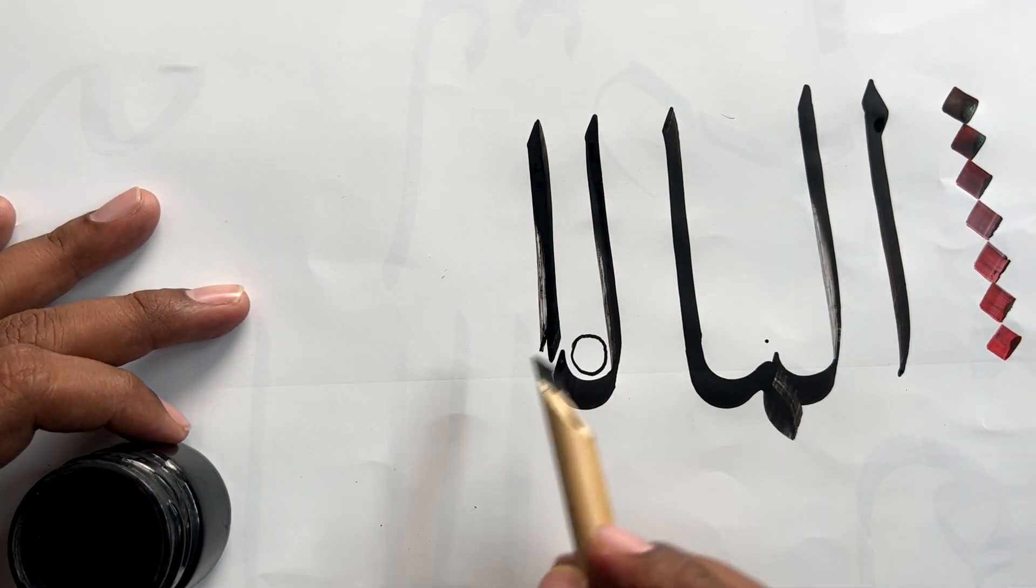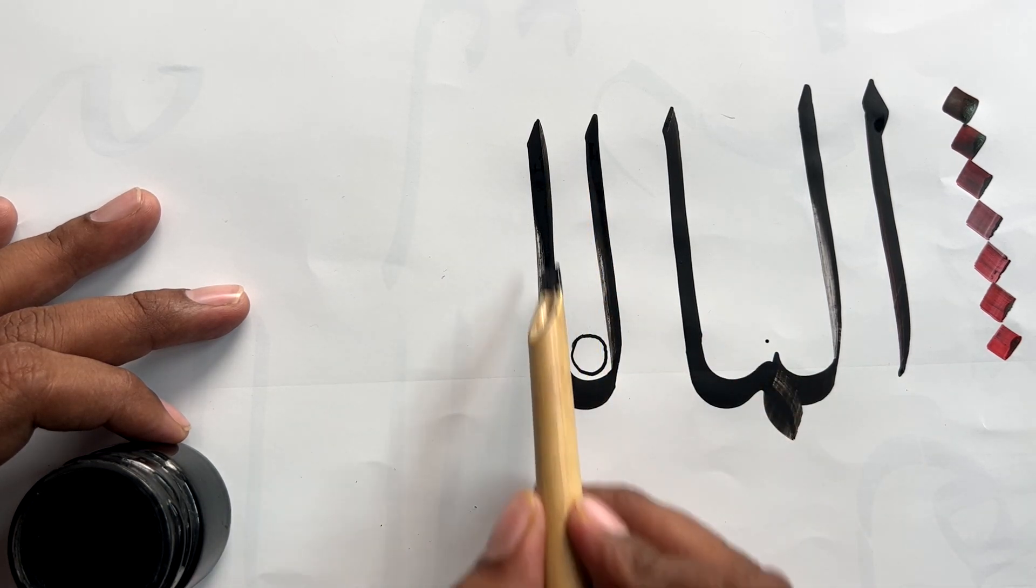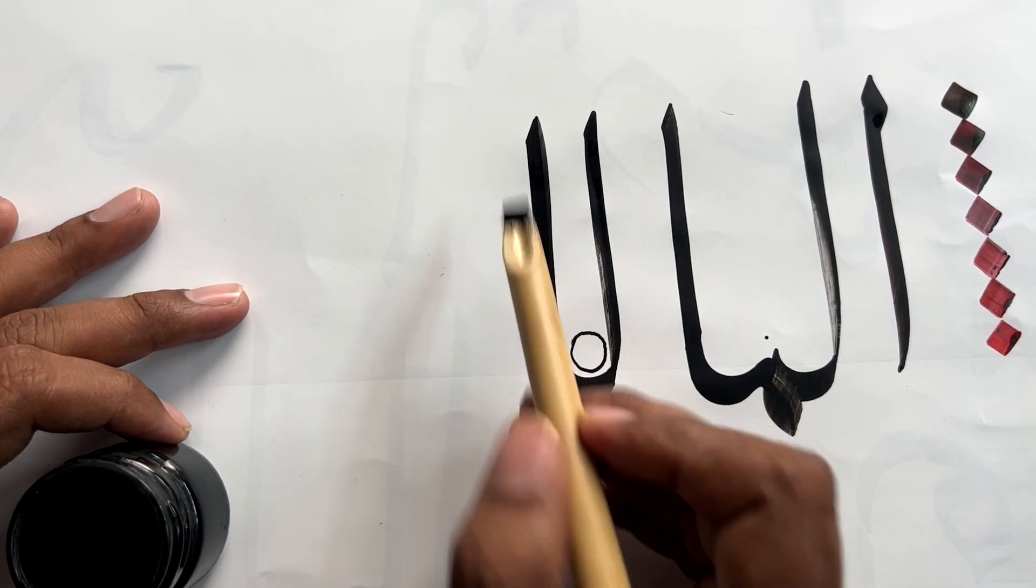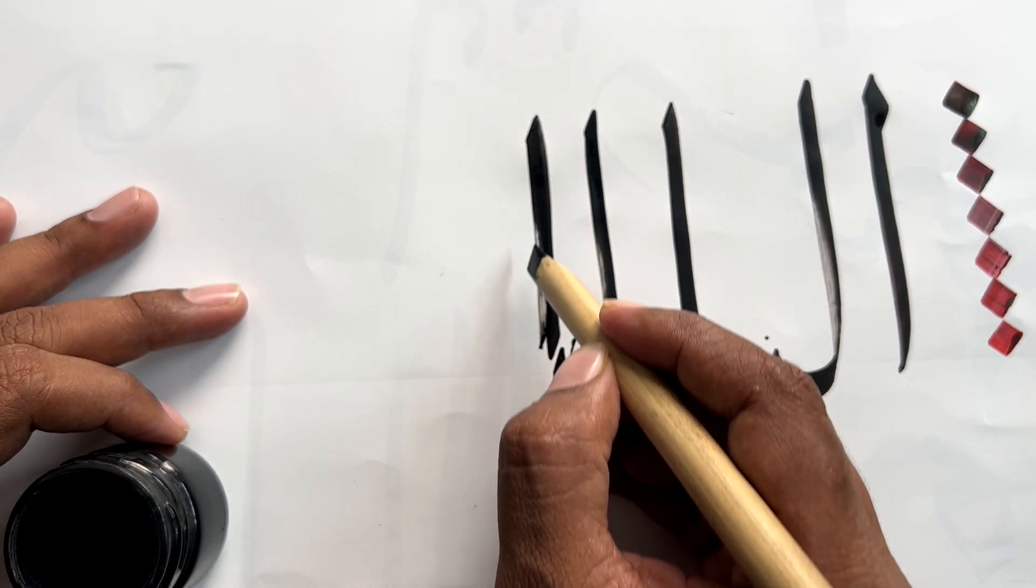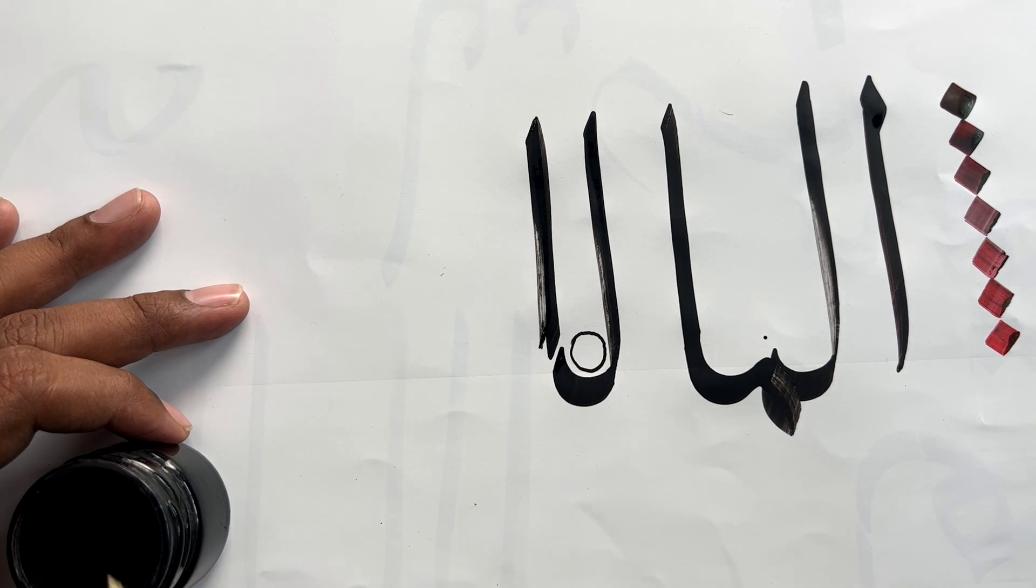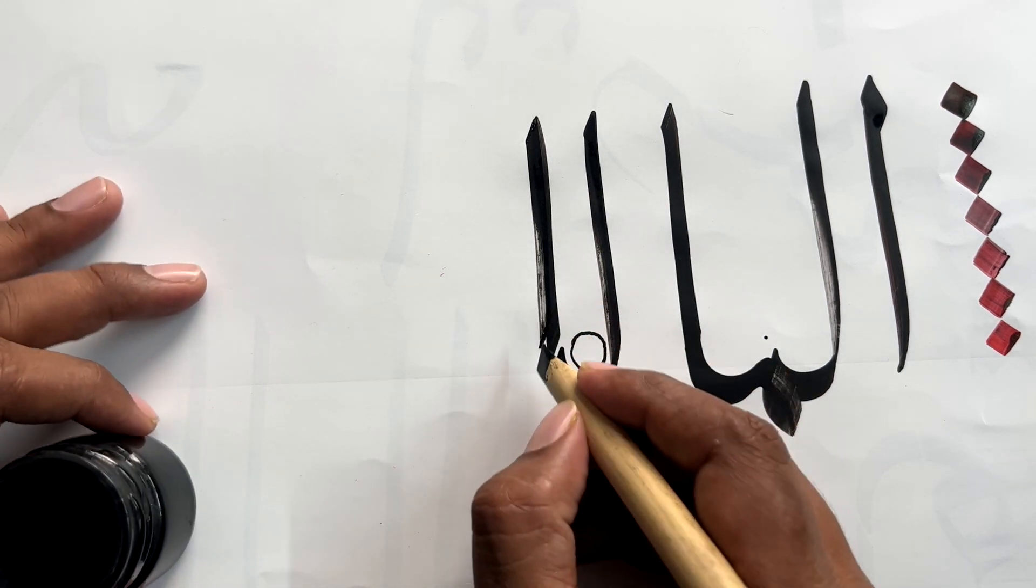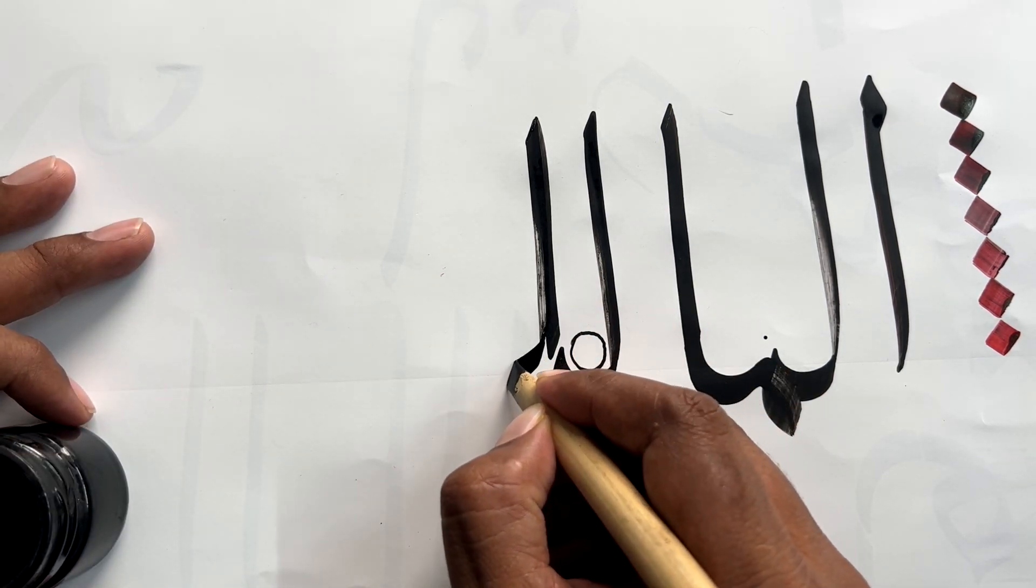When you make kaf or lam, once you make this first stroke, you'll merge the qalam and then you'll exit halfway and come down. So this stroke is broader. And then from here you make the casa of kaf.